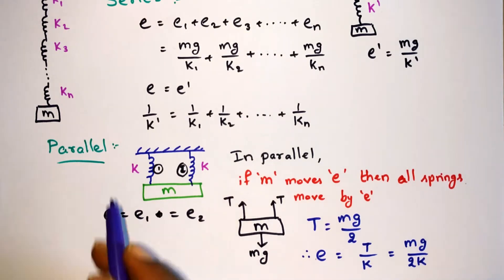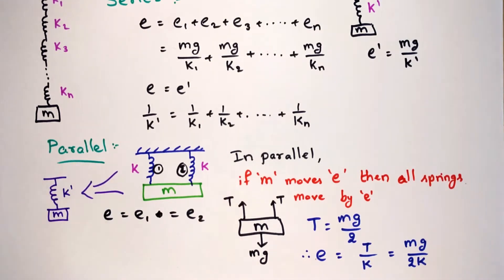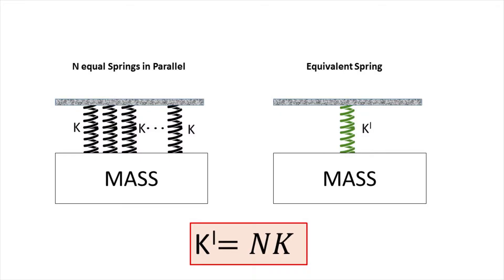Now if the two springs are replaced by an equivalent spring of spring constant k', then its elongation E' equals Mg by k'. And since E equals E', we can write k' equals 2k. Thus the equivalent spring constant k' equals 2k. Similarly, if N equivalent springs are connected in parallel, then k' equals Nk.